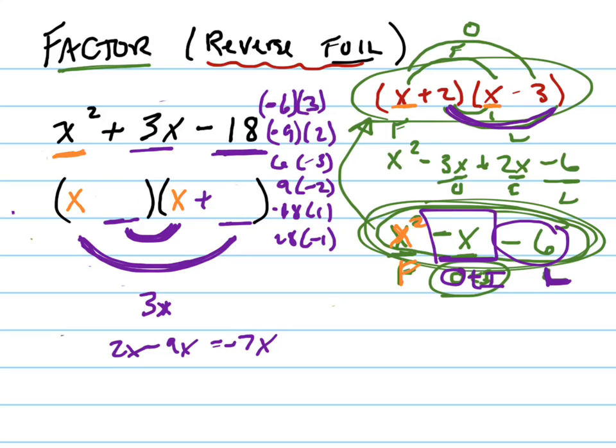So let's try different numbers. And the more you do this, the easier it becomes. You probably can see that the bigger number has to be positive and the smaller number has to be negative because we want there to be a positive right here. So let's try positive 6 and negative 3.